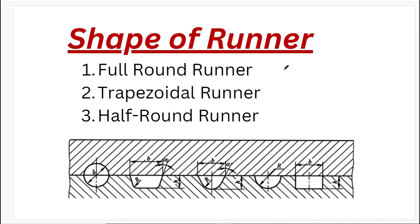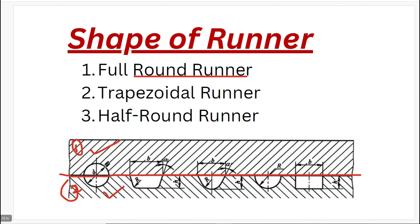The shape of the runner can be full round, half round, trapezoidal, rectangular, or U-shape. This first image shows the first mold half and the second mold half, with the mating or parting line visible between them. The full round runner is split between the two mold halves — a half circle on each side — while the trapezoidal and other profiles are cut into one side. Most of the time, full round runners are used in mold design.